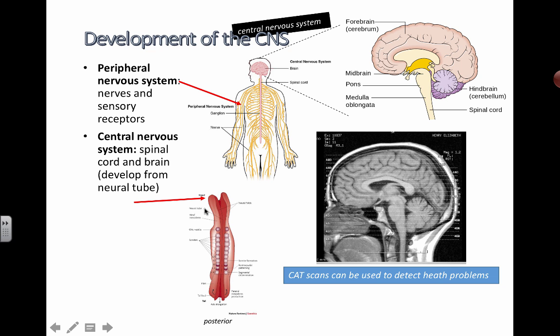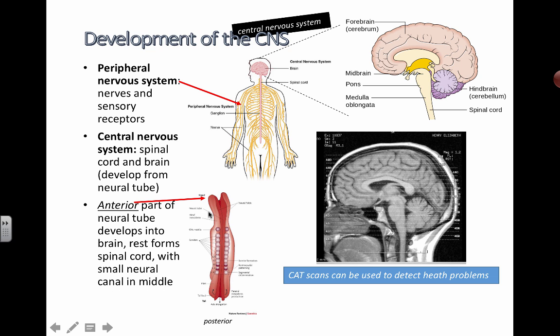The brain actually develops from the anterior part of the neural tube, and the rest of the neural tube down here is going to turn into the rest of the spinal cord, with a small neural canal in the middle.